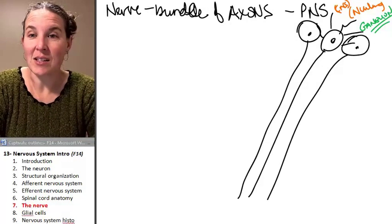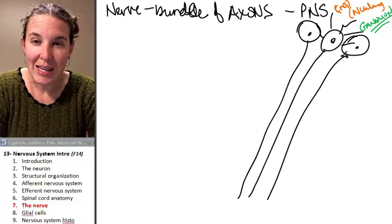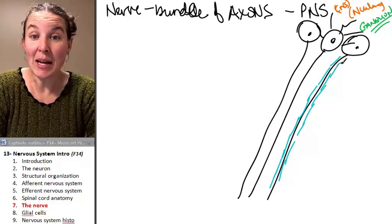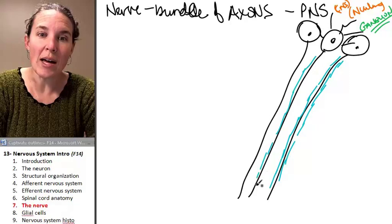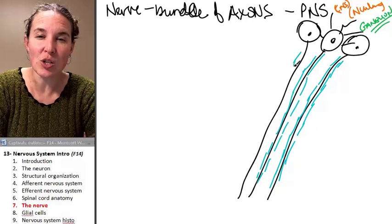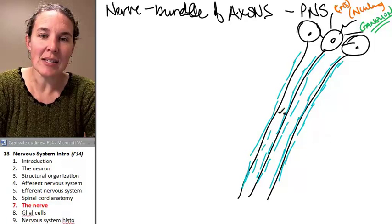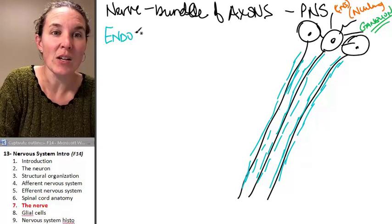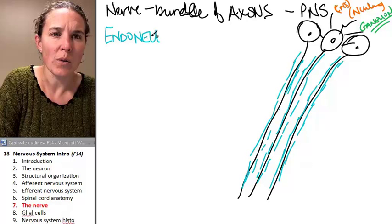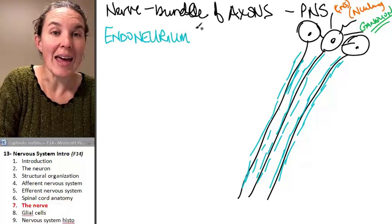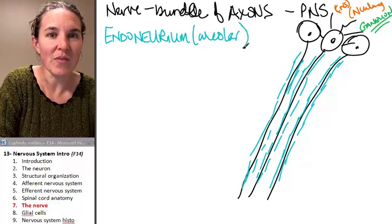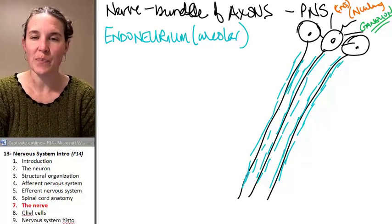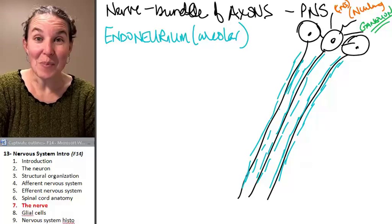All it is is our bundle of axons. We have each individual axon, whether it's myelinated or not. It might be myelinated. But regardless, each one is surrounded in a little connective tissue sheath that is made up of areolar connective tissue, and it's called the endoneurium. And it's made of areolar connective tissue. And each individual axon is surrounded by that areolar connective tissue.